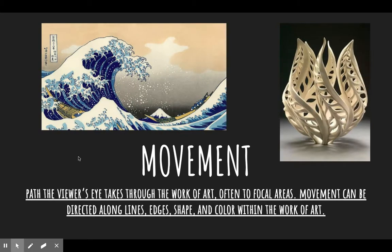Movement is the path the viewer's eye takes throughout the work of art, often to focal areas. Movement can be directed along lines, edges, shape, and color within the work of art. So in The Great Wave here we're going from one edge to the other with this movement of the wave, with lines kind of directing us in that motion. It leads our eyes through the work of art.